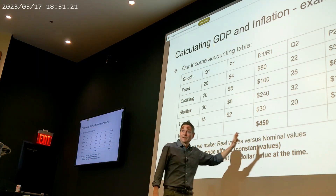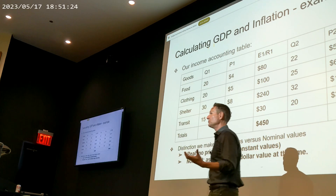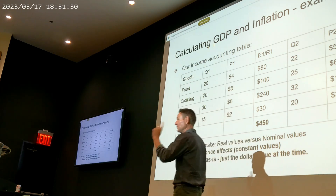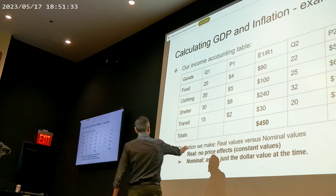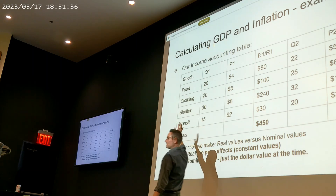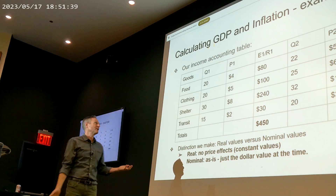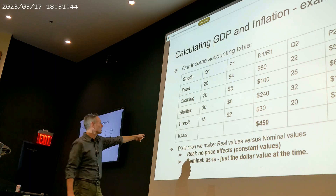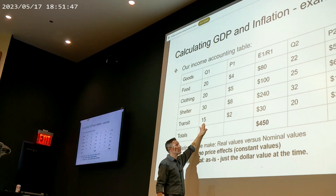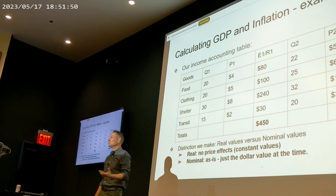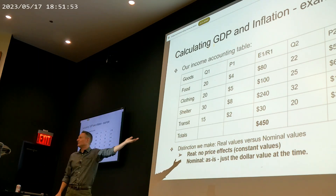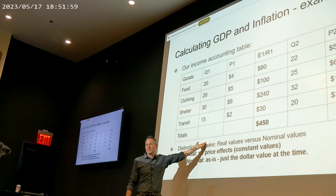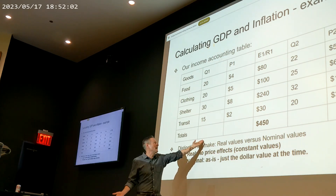What we're trying to do is calculate how much stuff we're producing in general in a given year. One way to do this is to think about the dollar value of all that stuff — then we get a single number. If you think about just four goods or four categories of goods, and you have the quantity of each that we've produced, the calculation problem is that if we're talking about how much the economy produces in general, we have to add these things up. But you can't just add 20 plus 20 plus 30 plus 15, because all the units are different — it would be meaningless.